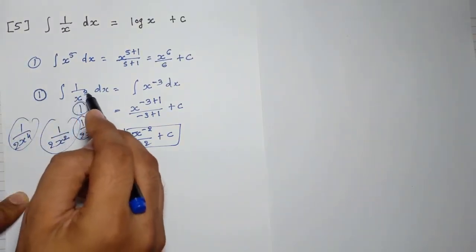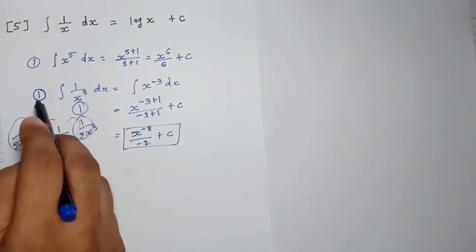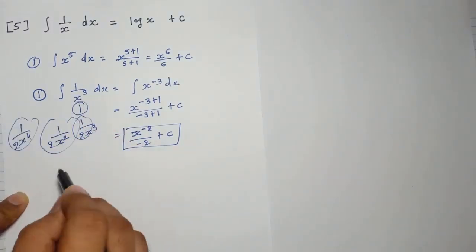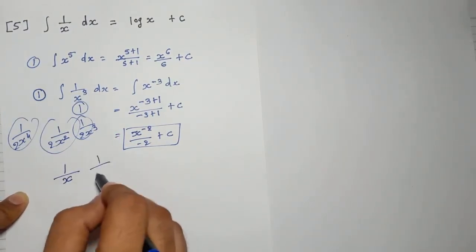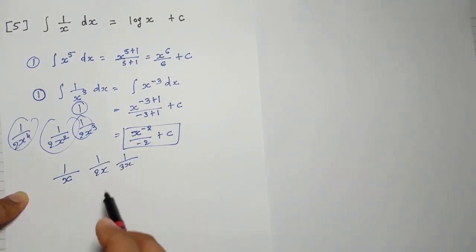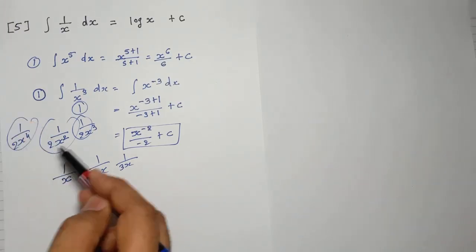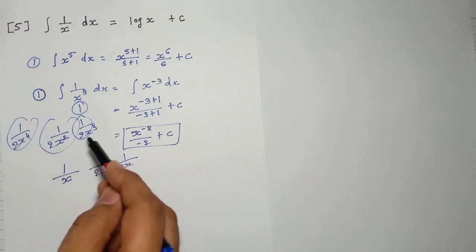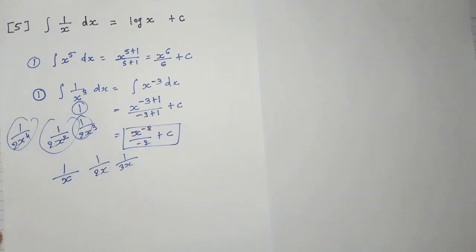So in division, if x has a power of 2, 3, 4, 5 — whatever — we use rule number 1. But if in division only x is given, or maybe 2x or 3x, in that case rule number 5 will apply. So: x with a power of 1, 3, 4, 5 — rule number 1. Remember these rules. Let's understand this with more examples.